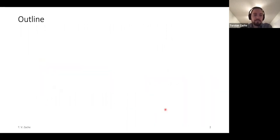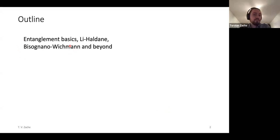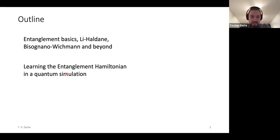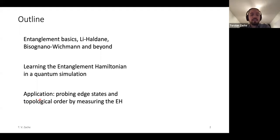The outline of my talk will be roughly this: I will start with some basics and introduce ideas by Li and Haldane, and spend quite some time talking about a theorem from quantum field theory — the Bisognano-Wichmann theorem. Then I will talk about entanglement Hamiltonian learning, or more generally Hamiltonian learning in a quantum simulation setup. I'll demonstrate this for a system of interest, maybe a Fermi-Hubbard model. Then I'll switch applications and talk about how we can use these ideas to probe things related to topological order, in particular probing edge states by measuring the entanglement Hamiltonian. Of course, if you have any questions in between, just go ahead and ask.